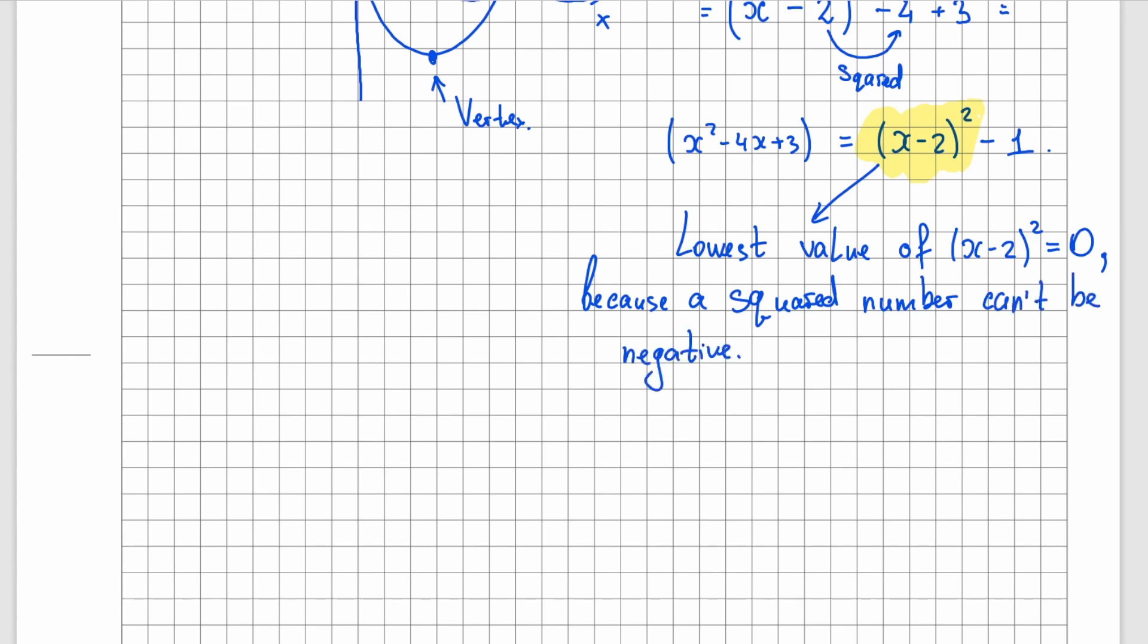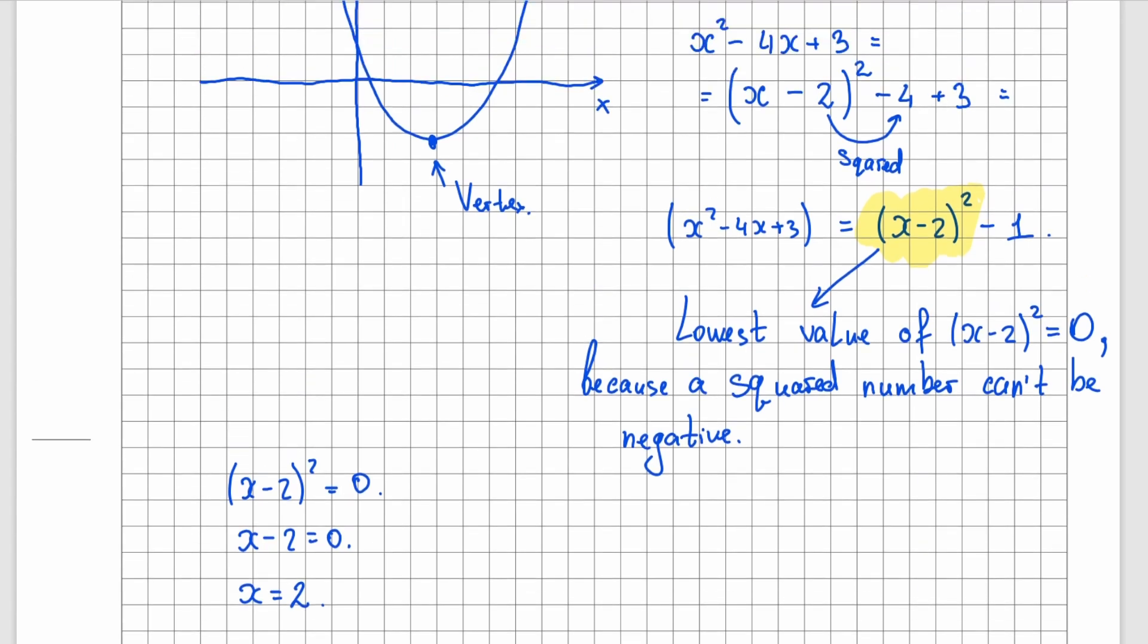Now when does it happen when x minus 2 squared equals to 0? That's pretty easy to solve. x equals to 2. Now that means x equals to 2 is the x-coordinate of our vertex. So this number here should be 2.